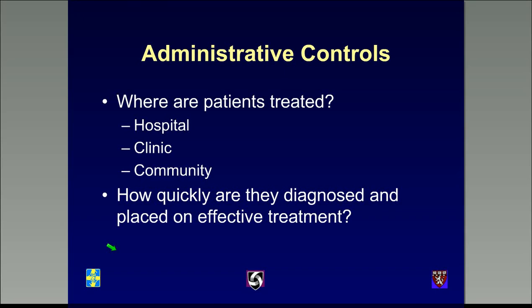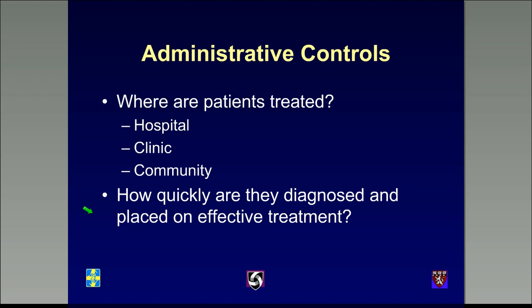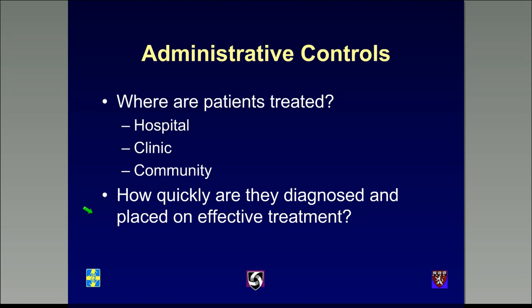The first administrative issue is where TB patients — particularly MDR-TB patients — are treated. Are they treated in the hospital, which is where most MDR-TB patients are currently treated? Are they treated on an ambulatory basis in a clinic? Or are they treated in the community? Increasingly important is how quickly they are diagnosed and placed on effective treatment. I want to emphasize the word 'effective' — treating MDR-TB patients with standard four-drug treatment intended for drug-susceptible TB will not reduce infectiousness quickly, whereas effective treatment will.